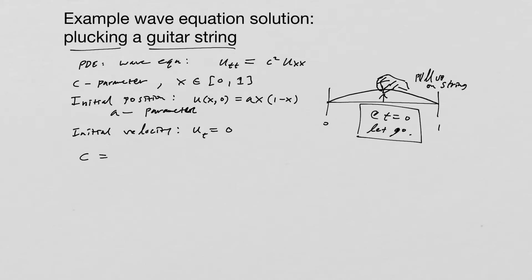This parameter C is going to equal the square root of the tension over the density of the string.